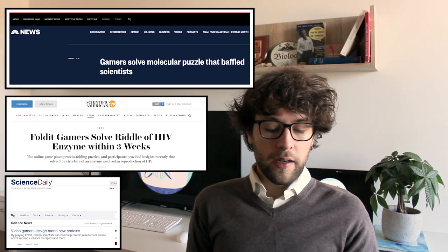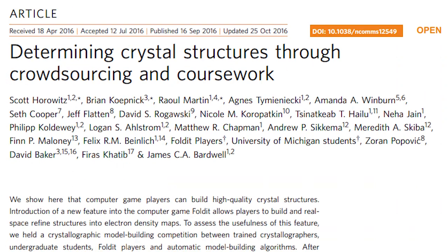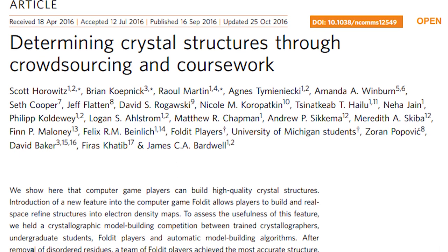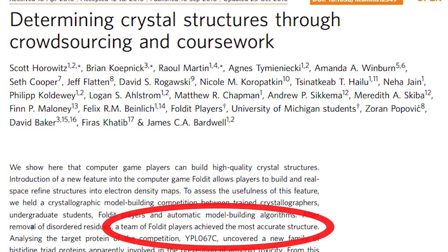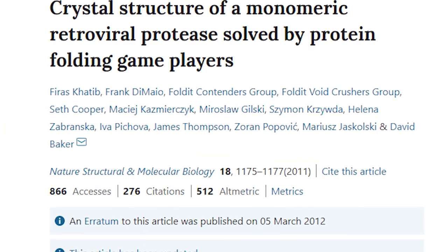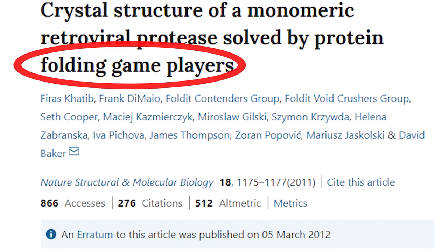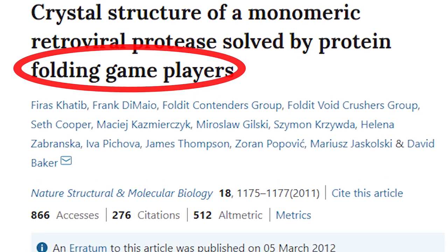So have Foldit players been successful in past years? The answer is yes. In 2019 it was reported that Foldit players were able to build protein structures more accurately than experts or automated model building algorithms. Foldit players also unraveled the crystal structure of Mason-Pfizer monkey virus retroviral protease. This protein plays a vital role in viral maturation and can be used to design new drugs against different viruses including HIV.